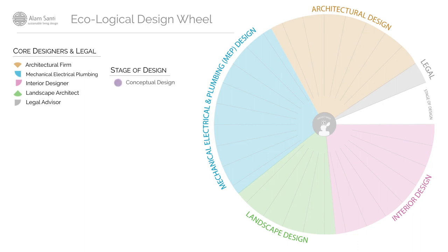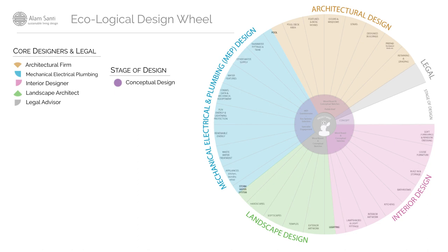The stages start with conceptual design — ideas usually demonstrated in mood boards: images, sketches, and ideas of how the project might look, giving you a taste of what it's going to be. The mood boards will eventually expand to cover a whole range of different design aspects. Interestingly, there are areas of overlapping design — for example, between architectural and MEP design for pool designs, or between landscapes and interiors where lighting is required for both.